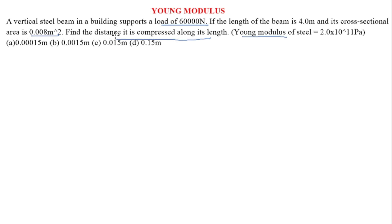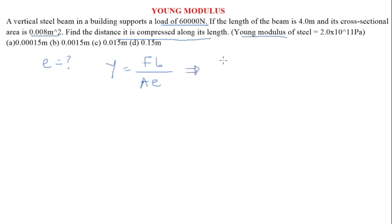We have the area. The question says find the distance it is compressed — the distance it is compressed is the extension, so that's what we're looking for. We're given the Young's modulus of steel. From the formula Young's modulus equals FL over area times extension, we can infer that the extension equals FL over Young's modulus times area. I derived this formula already in my video on Young's modulus or elastic moduli.